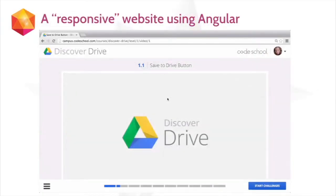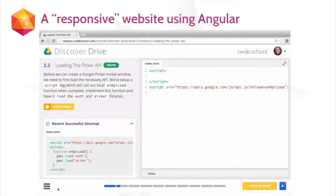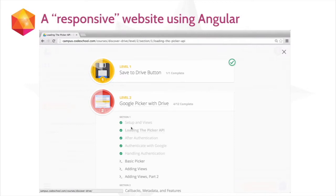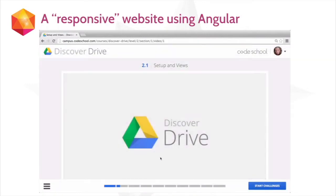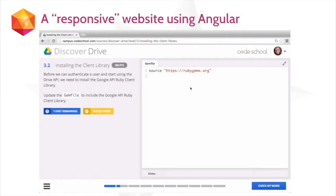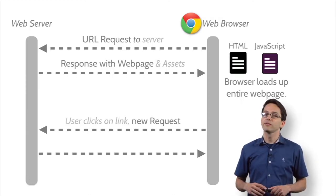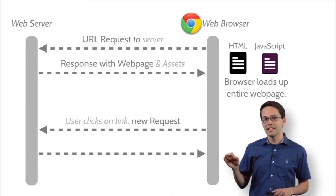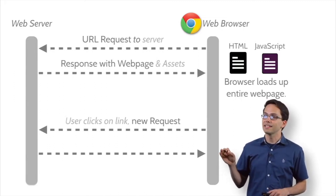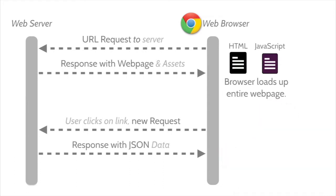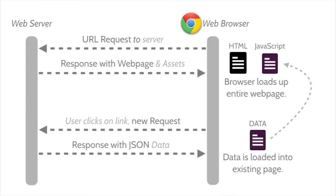Here's an example of a web page I would call responsive — our recent Discover Drive course. You'll see when I click around this page, the page refresh is almost unnoticeable. The page is so responsive and quick every time we click on a link. Behind the curtains, when a request is first fired off, the server responds back with all the web page and assets, and the browser loads up the entire web page. But this time, when a user clicks a link, something different happens — it only requests the information it needs to update the page, in this case just some JSON data. Once our browser has this data, it loads it into the existing page and updates what we see.